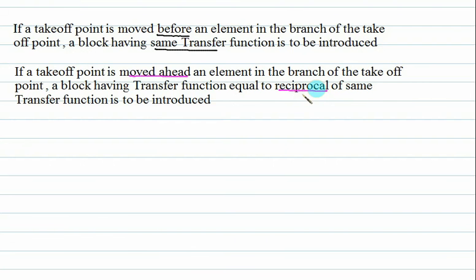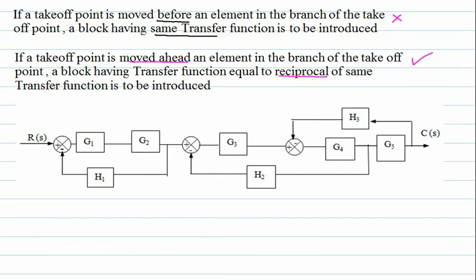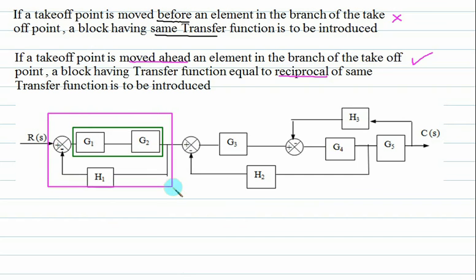So if you just remember two words. But don't perform this operation at the start. First check series, then parallel, then feedback, and if required then perform this — and avoid this operation, prefer the other operations. For the first operation, if series is possible, we will eliminate series first. Then inside this one, is a parallel operation possible? What is the result of series? G1 into G2. And at the same time we will perform two operations: first is series, and then feedback.